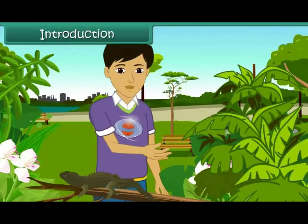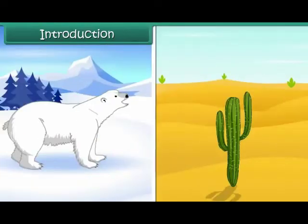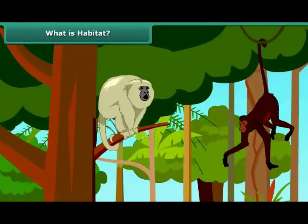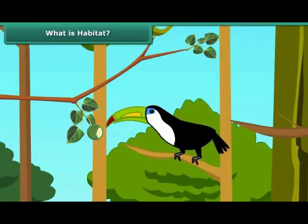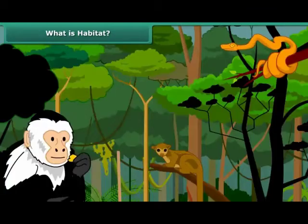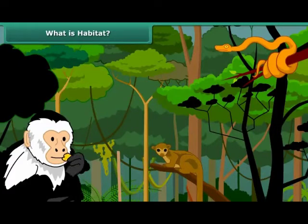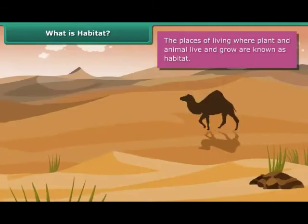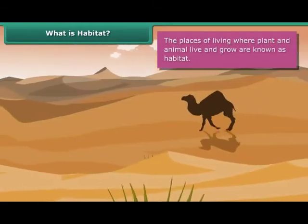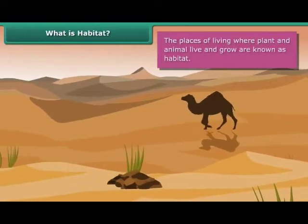These adaptations allow animals and plants to survive and grow in a particular habitat. In this lesson, we are going to learn how different plants and animals adapt according to their habitats. Every organism requires some place where its basic necessities like food, water, and shelter should be met. This place of living where plants and animals live and grow is known as habitat. All living organisms should adapt themselves to their habitat to thrive and survive.